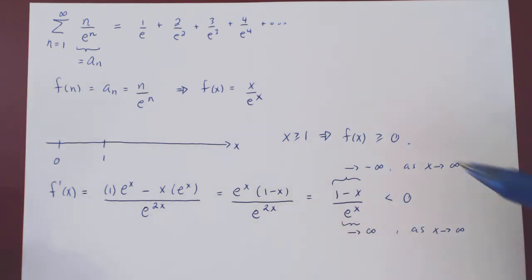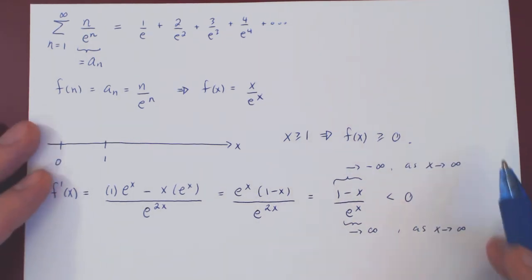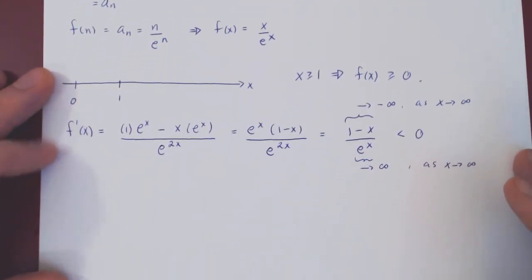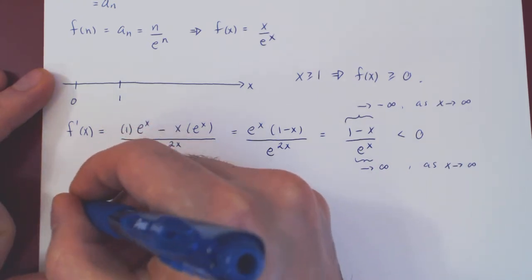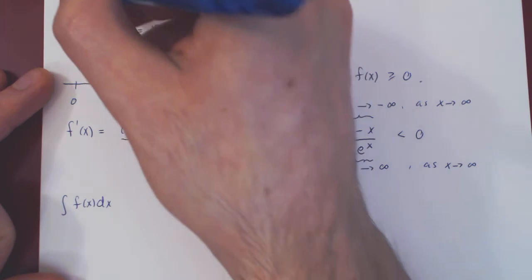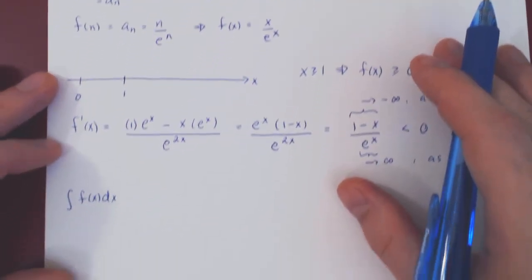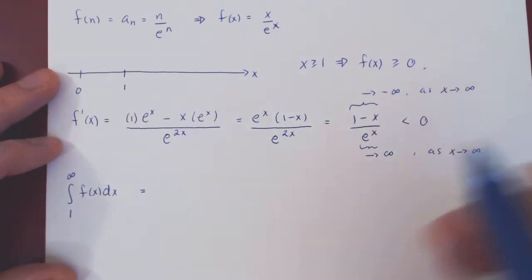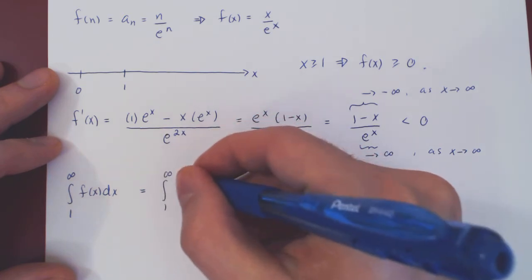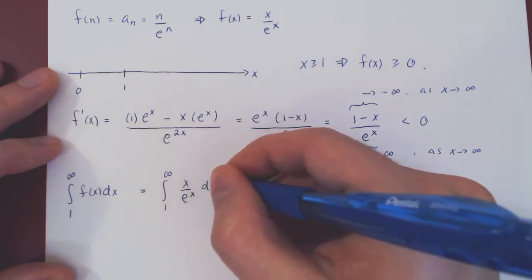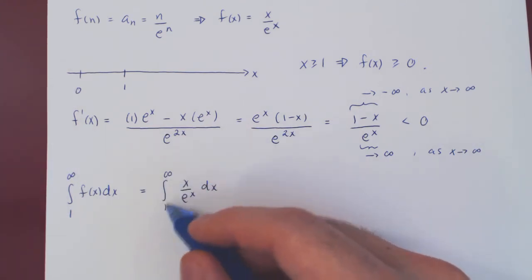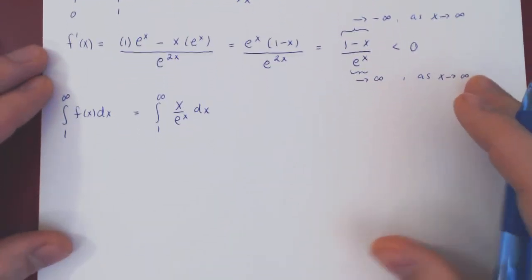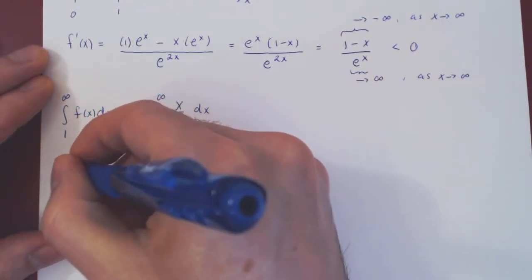The two conditions are satisfied and we're good to go. We can replace the infinite series with the improper integral. We are summing from 1 to infinity, so we will integrate f from 1 to infinity. Before dealing with the improper integral, let's first find our antiderivative. We are trying to integrate x over e to the x dx.